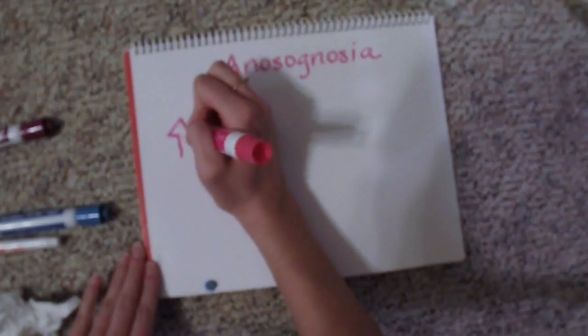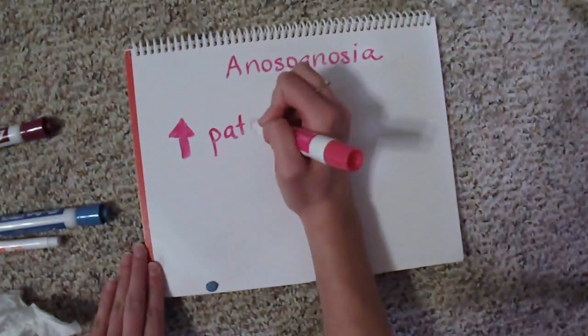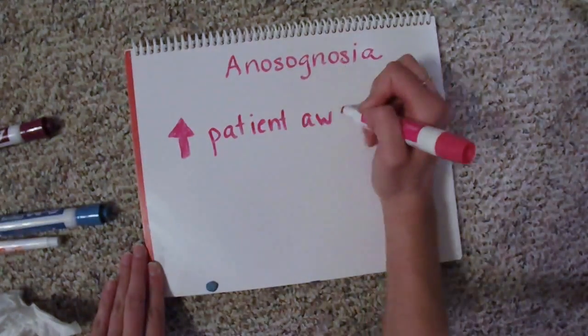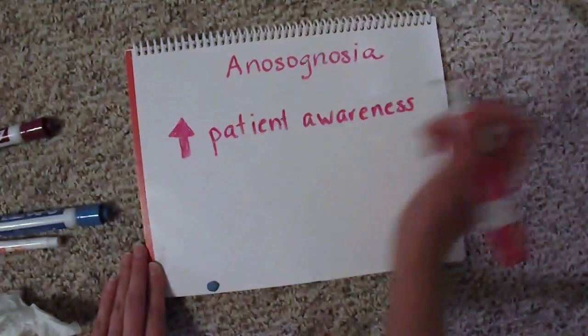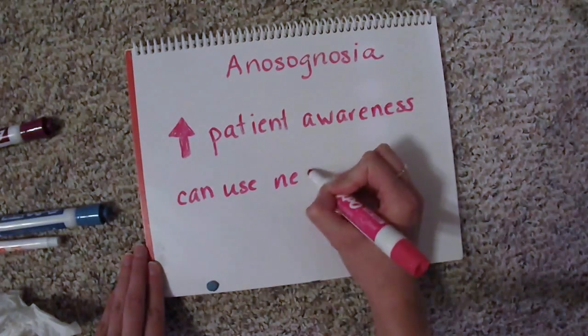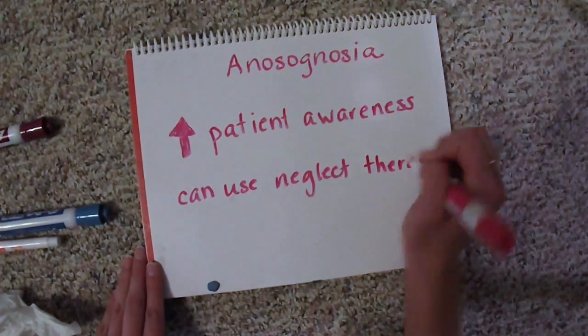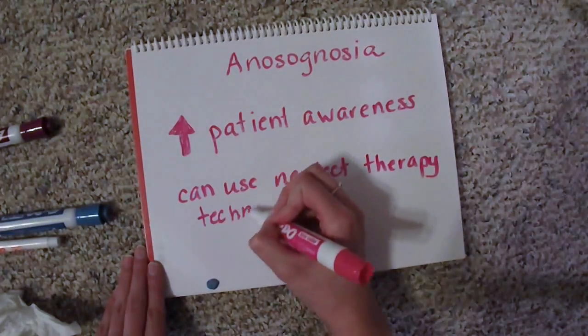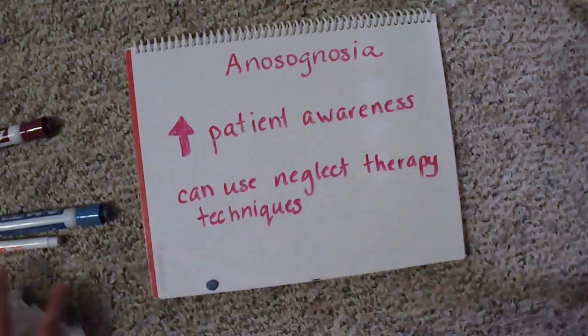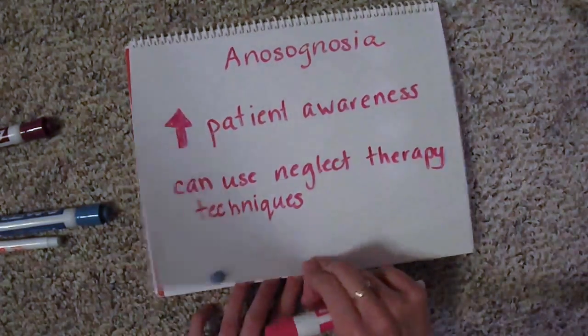Treatment for anosognosia is designed to help the patient gain awareness of their deficit. We explain what we are working on and why, and we can tell the patient: 'We are doing this because you aren't noticing anyone on the left side of your body,' or whatever their specific case may be.